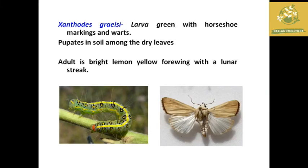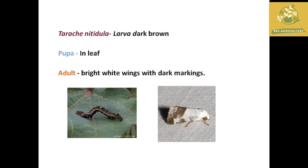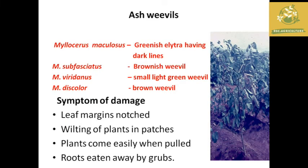Next is Xanthodes graellsii. It has a horseshoe marking. Pupation occurs in dry leaves. The adult is yellow in color with four wings and lunate cheeks. Next is Trachea knitted — larvae are dark brown with dry leaves as pupation site. The adult has white and dark wing rings and ash-grey wings.